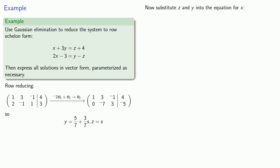Now that we know values for y and z, we can substitute these into our equation for x. Our first row corresponds to the equation x plus 3y plus minus 1z equals 4. Substituting in our values for y and z gives us an equation. Solving this equation for x gives us x equals 13 sevenths minus 2 sevenths s.